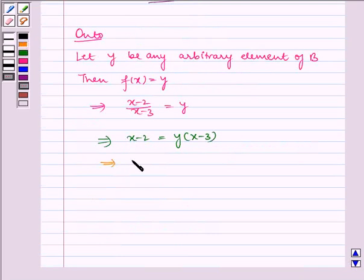Which implies x minus 2 is equal to xy minus 3y, which implies x is equal to (2 minus 3y) by (1 minus y).